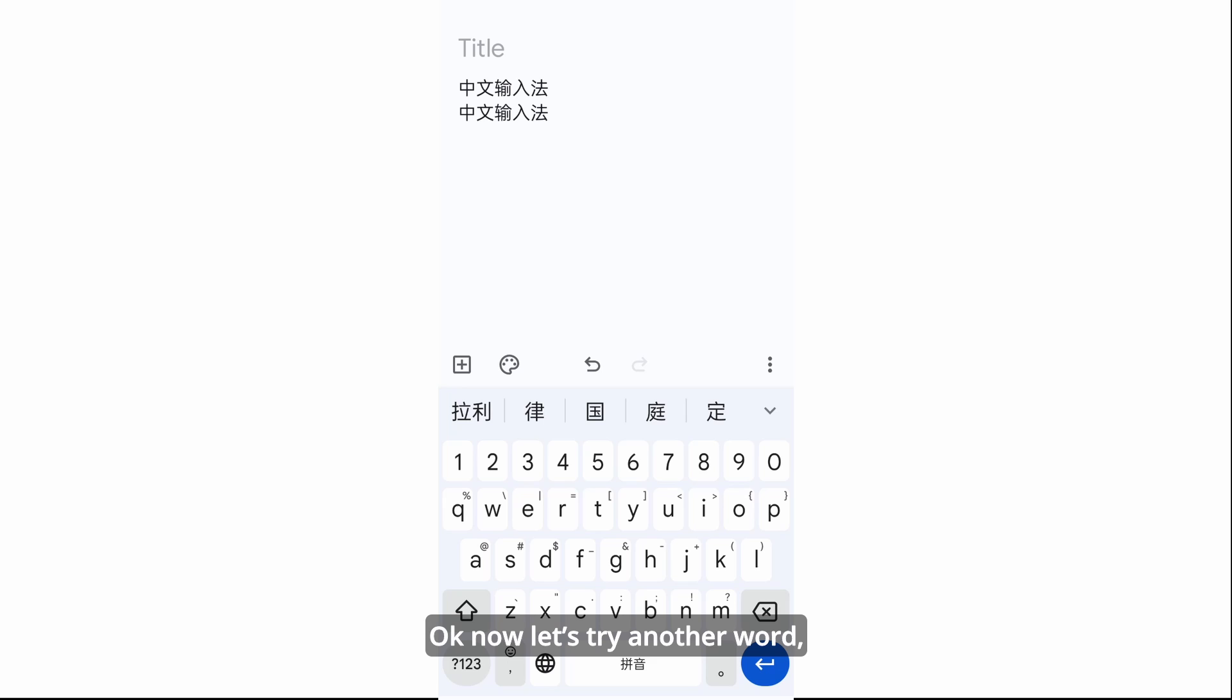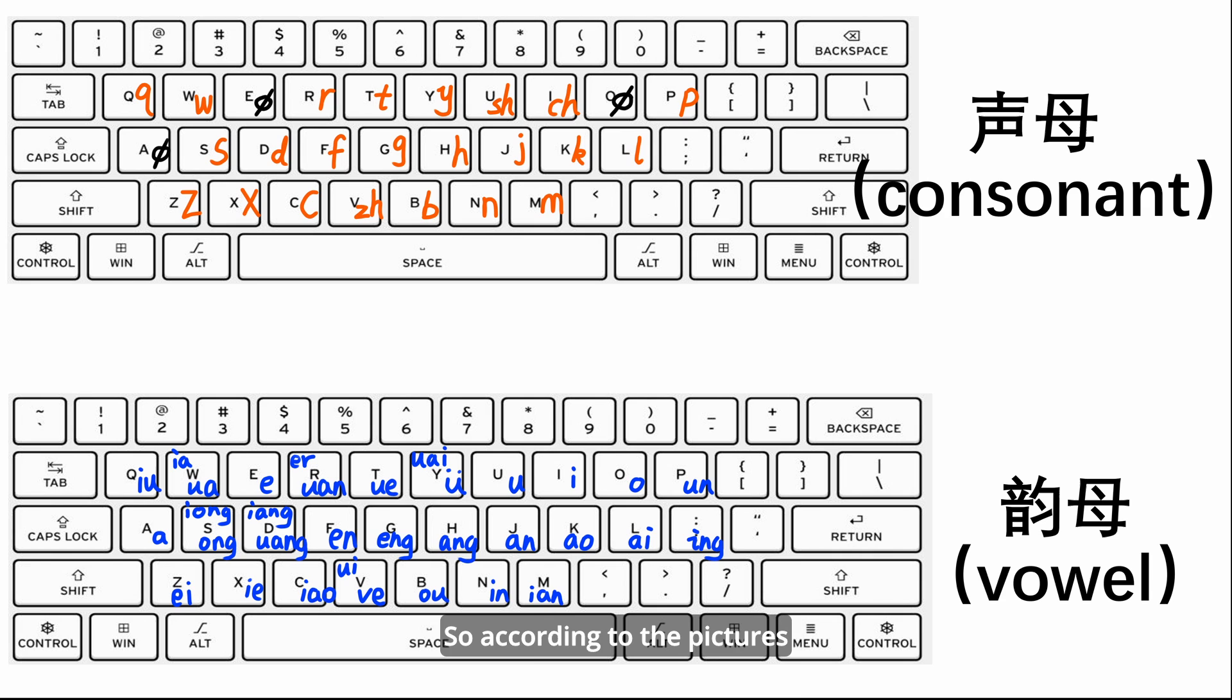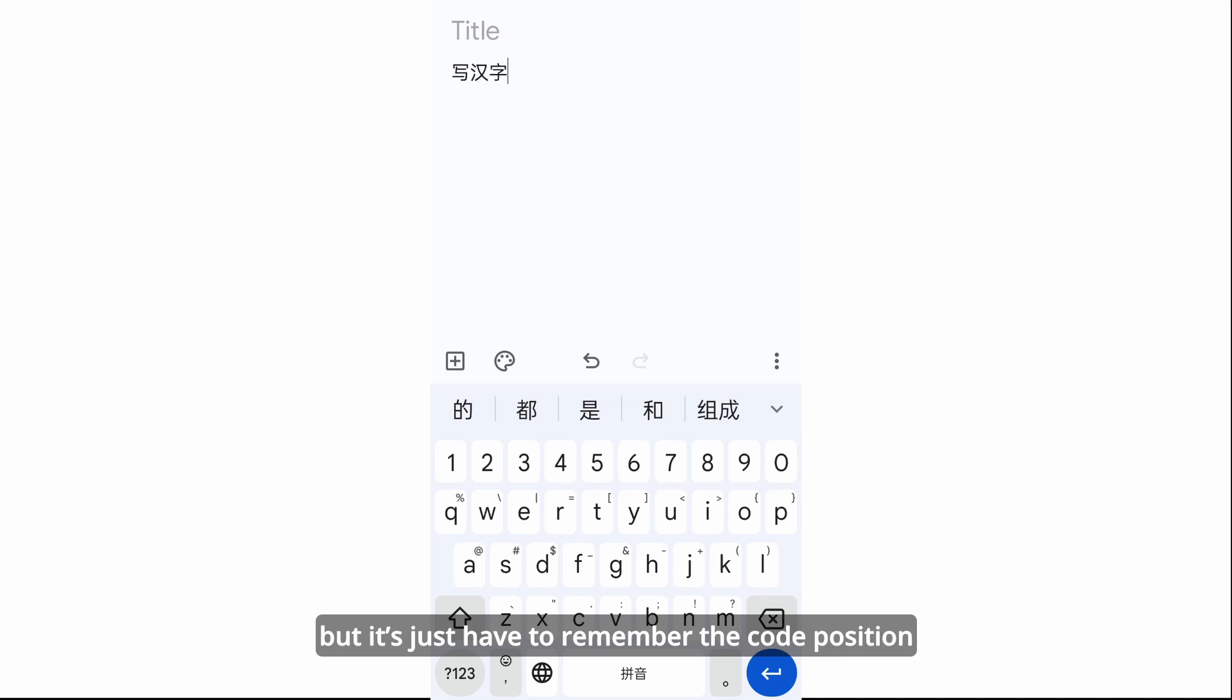Another word. So according to the picture we can input. We can input vk, vh, vhgzi. Okay, now we got this. It's not very complete, right, but it's just to help remember the code position on the keyboard and the inputting rules.